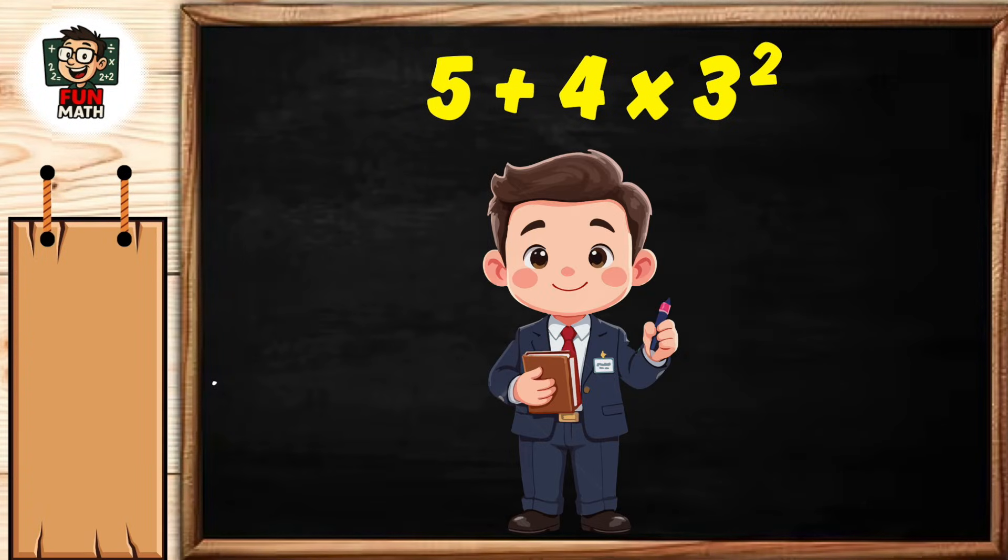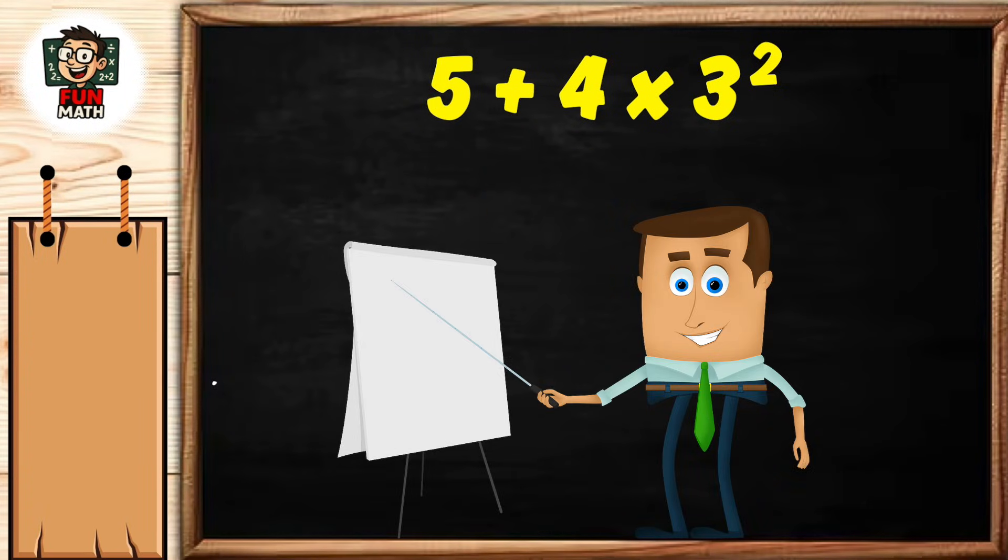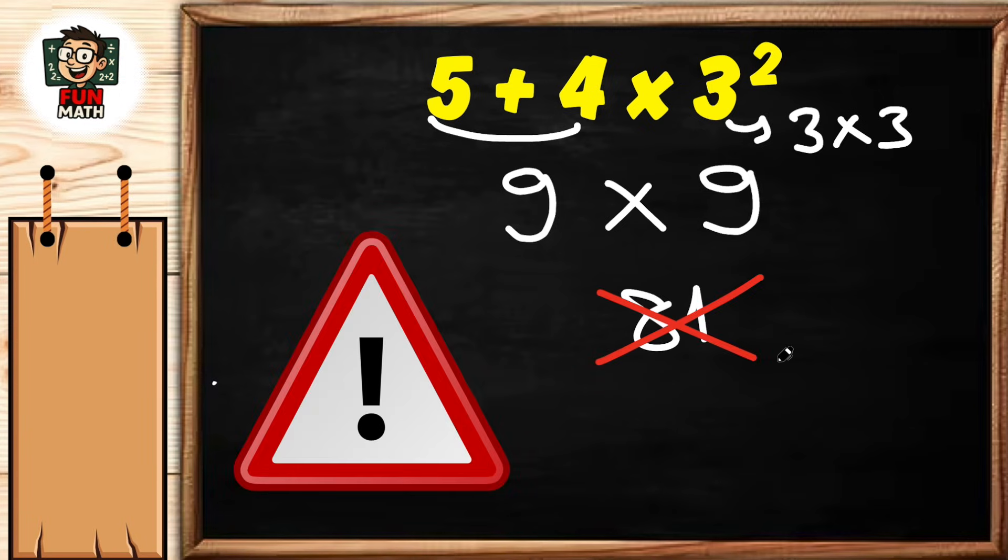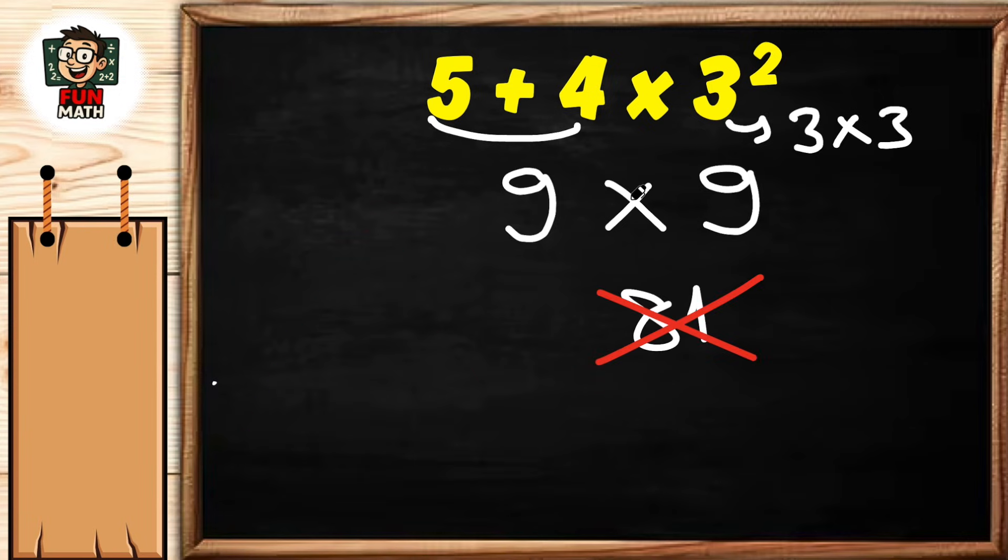Hello everyone, we are back with another good question. Let's take a quick look at our question: 5 plus 4 equals 9, 3 to the power of 2 equals 3 times 3, 3 times 3 equals 9, finally multiply 9 times 9 equals 81. If you solve it this way, you made a mistake because we didn't pay attention to order of operations.